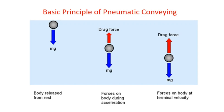The basic principle is terminal velocity. To understand terminal velocity, let us consider this phenomenon. Imagine a particle that is left in free fall — the particle tends to move downward because of its self weight and the net gravitational force acting on it, that is mass multiplied by gravitational acceleration. Because of that, the particle tends to go down.